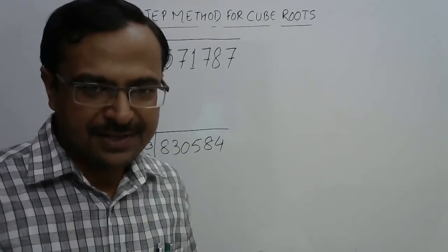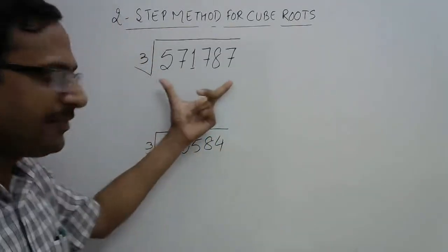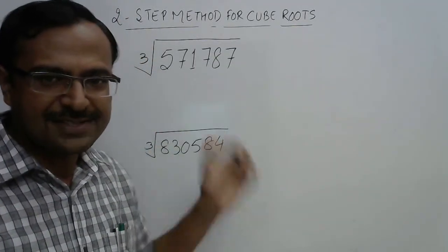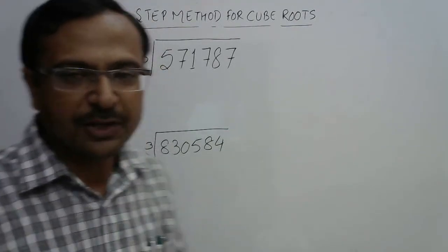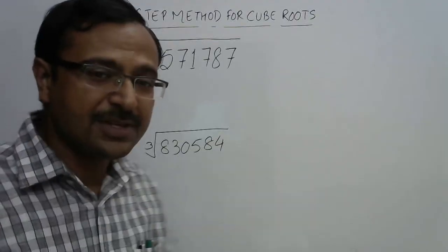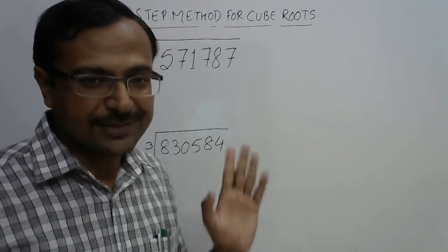Hello friends, here is a demonstration of speed maths. See the numbers written here: 571787 and 830584. Such large six-digit numbers, and you can find the cube root of all these numbers without actually making prime factors of such large numbers.